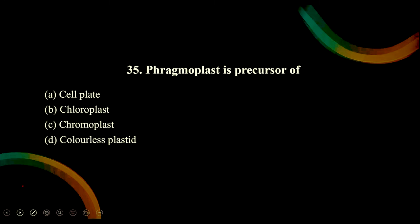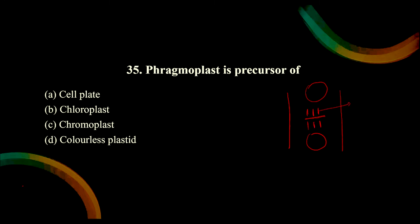Phragmoplast is a precursor of what? Phragmoplast forms during plant cell division. Consider a cell with a nucleus - the cell plate is going to be formed. When the cell plate forms, phragmoplast microtubules form on both sides. The phragmoplast is an enlarged barrel-shaped spindle used to form the cell plate and is helpful for plant cell division. The correct option is cell plate. Chloroplast, chromoplast, and leukoplast are all plastids, so they are wrong.